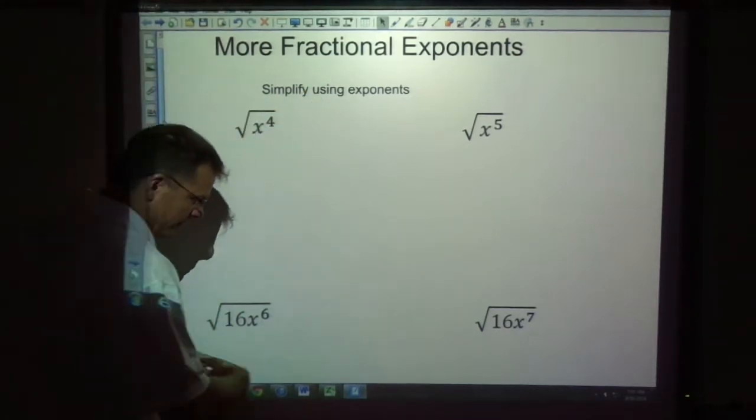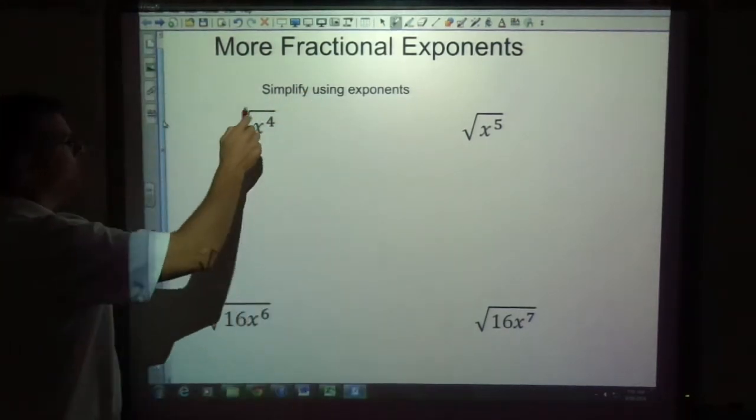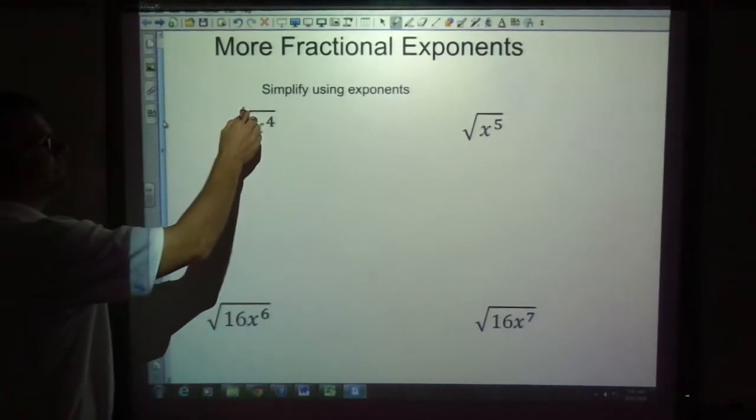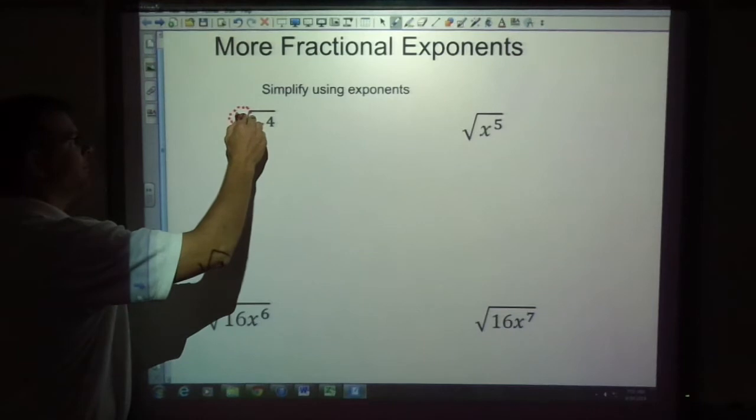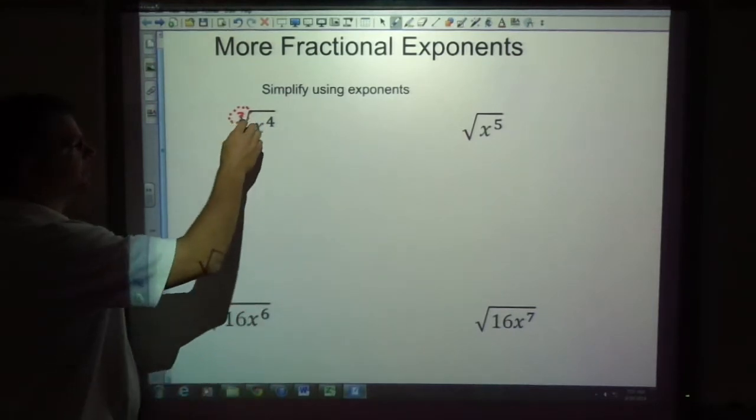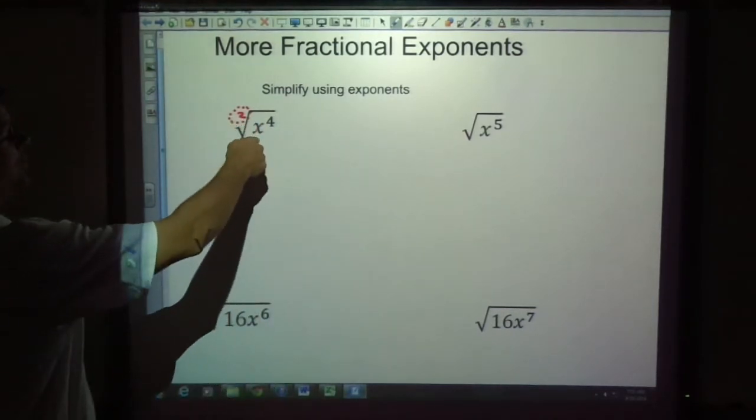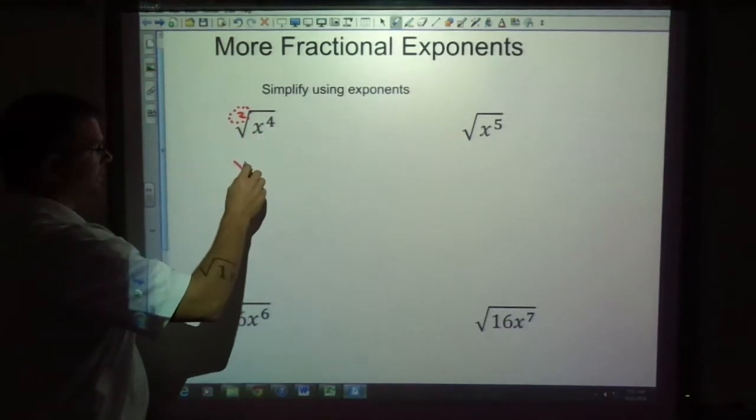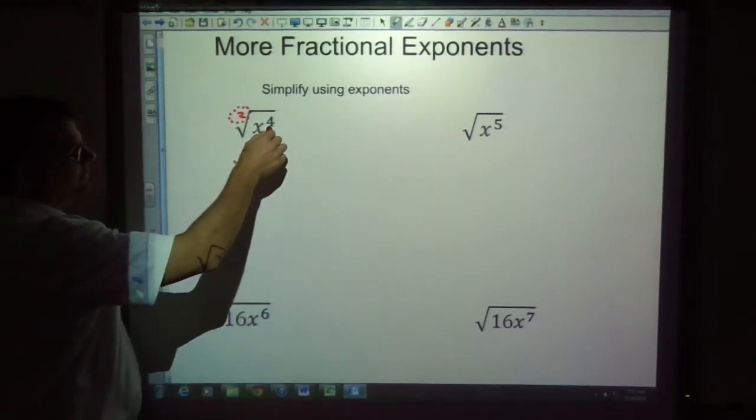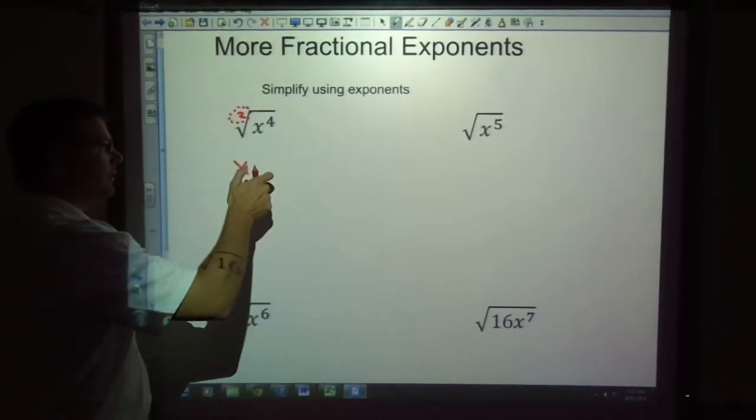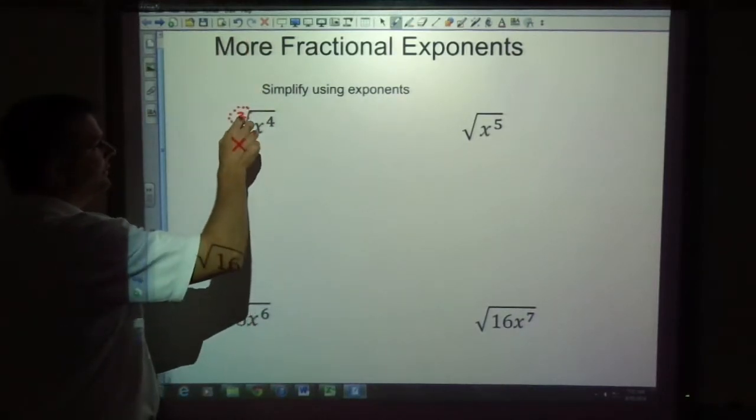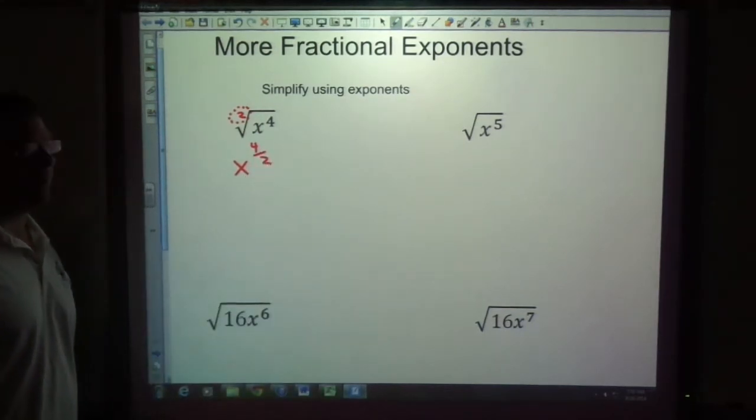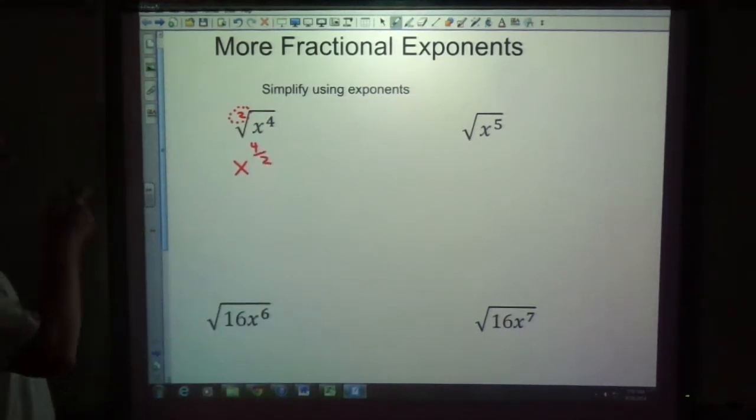Simplify using exponents. If I have the root here of x to the fourth, the first thing is that if there's no number here, remember it's automatically a two. It's automatically a square root. So if I want to change this to exponents, remember that this is going to be x to the - this number is what's making it bigger, it's going to go in the numerator. This number is the root, it's making it smaller. So x to the four over two power.